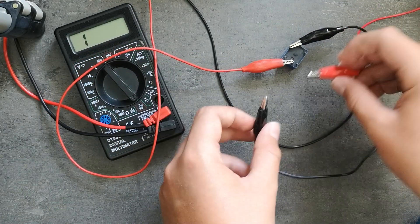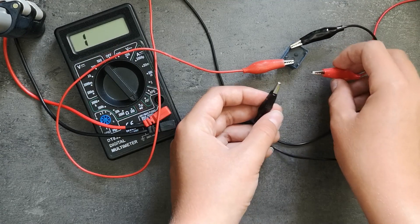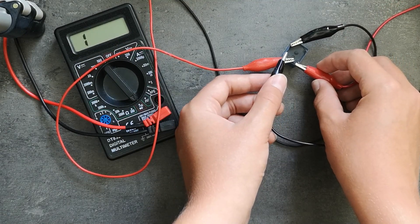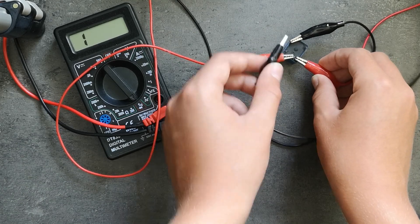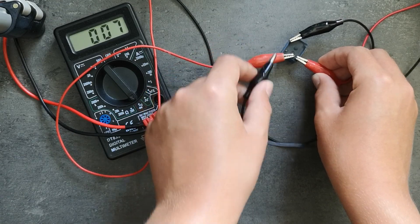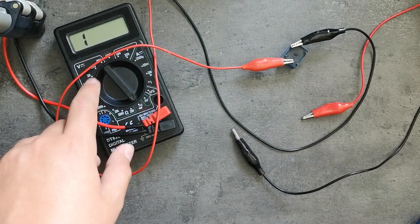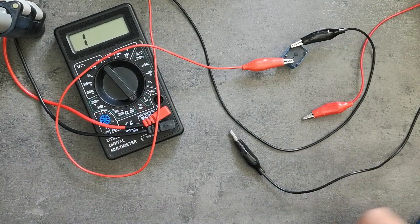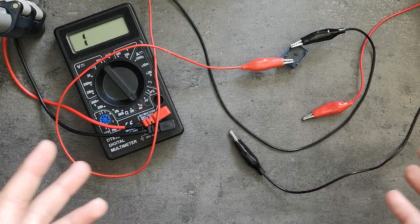And now if we grab the alligator clips from the lab bench power supply and power the relay you can see that electricity is flowing through that relay into my multimeter which tells us with a beep that there's electricity.